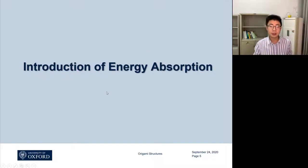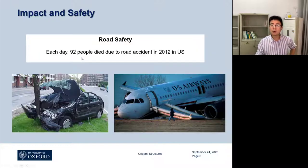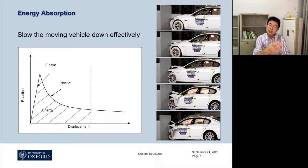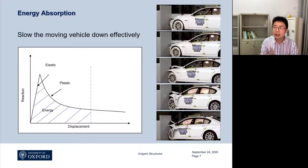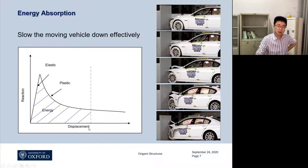Energy absorption is an important issue — many people die due to road accidents every day, just in the US. Because of car crashes, if we have good energy absorption during the crash, the kinetic energy of the vehicle can be absorbed by the structure and people will be safer. If we have a car crashing towards a wall and record the reaction force on the wall versus displacement, we get this sort of plot, and the area underneath it is the energy absorbed.